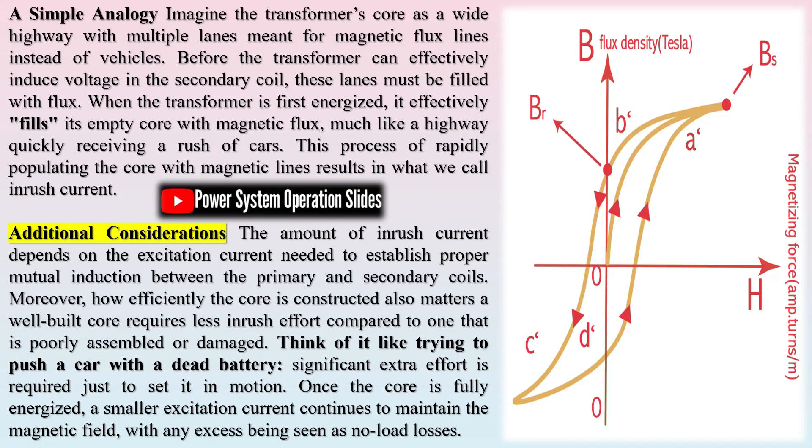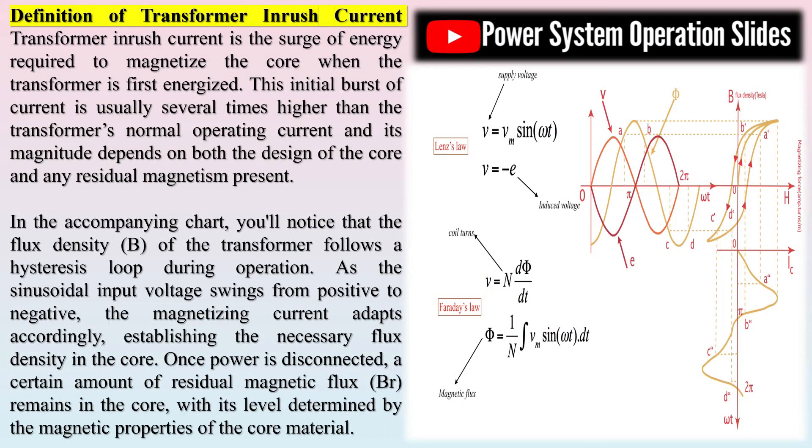A simple analogy: imagine the transformer's core as a wide highway with multiple lanes meant for magnetic flux lines instead of vehicles. Before the transformer can effectively induce voltage in the secondary coil, these lanes must be filled with flux. When the transformer is first energized, it effectively fills its empty core with magnetic flux, much like a highway quickly receiving a rush of cars. This process of rapidly populating the core with magnetic lines results in what we call inrush current.